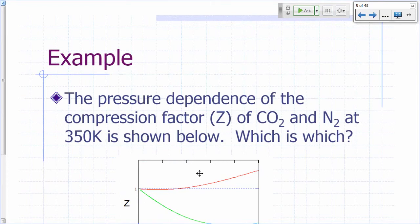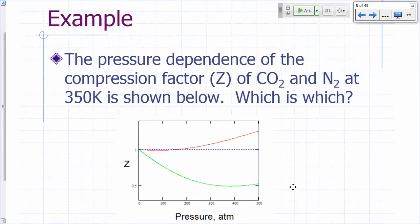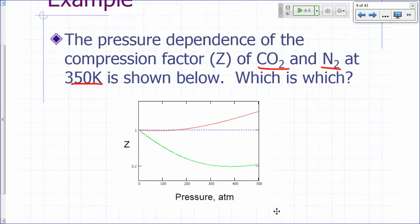So, here's a typical graph that you can use to show how the compression factor Z depends on pressure. This is for carbon dioxide and nitrogen at 350 Kelvin. Which one do you think is carbon dioxide and which one do you think is nitrogen? This is a plot of Z versus pressure. So, increasing pressure here.